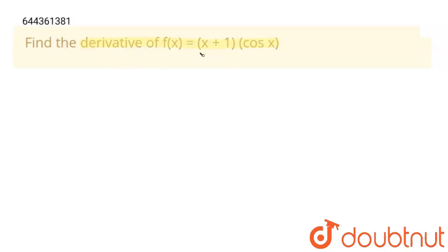So this derivative is in form of u into v. And u is equal to x plus 1 and v is equal to cos x.